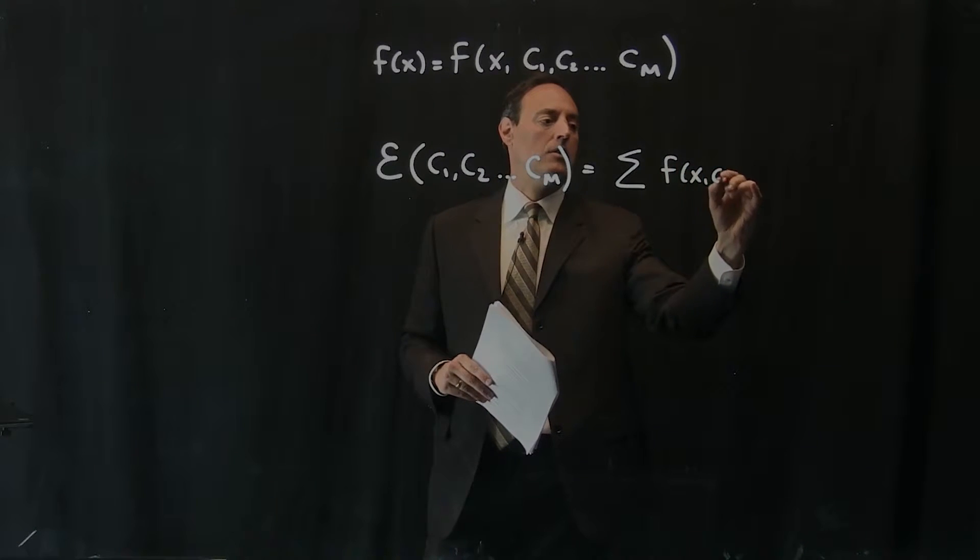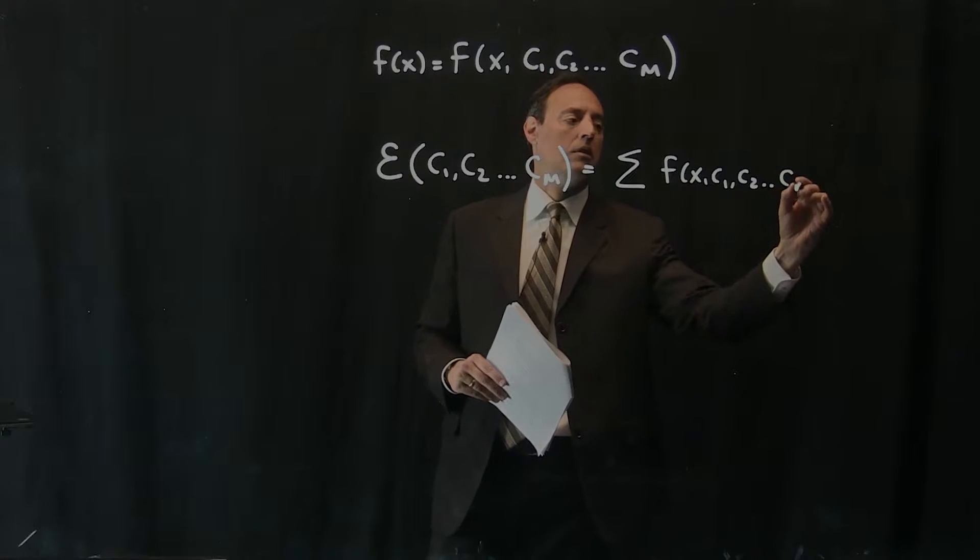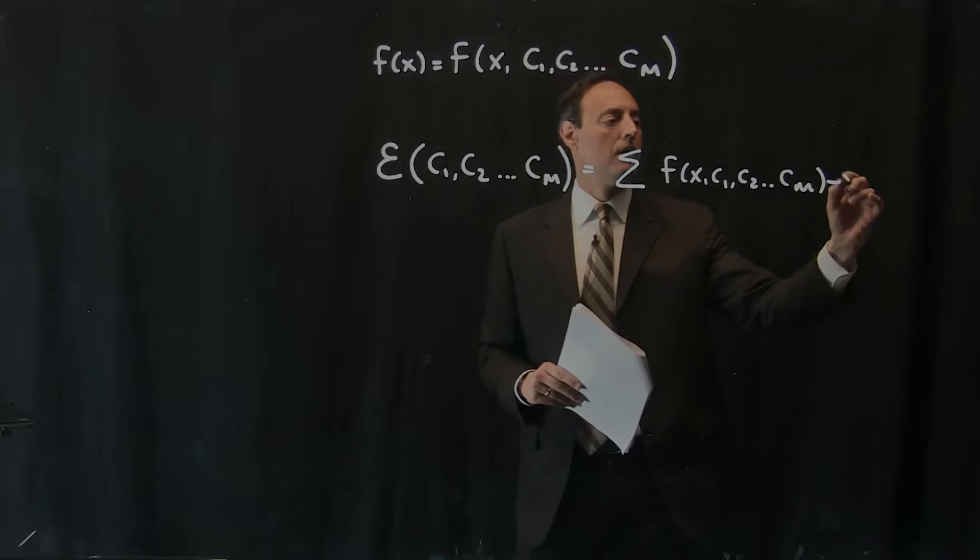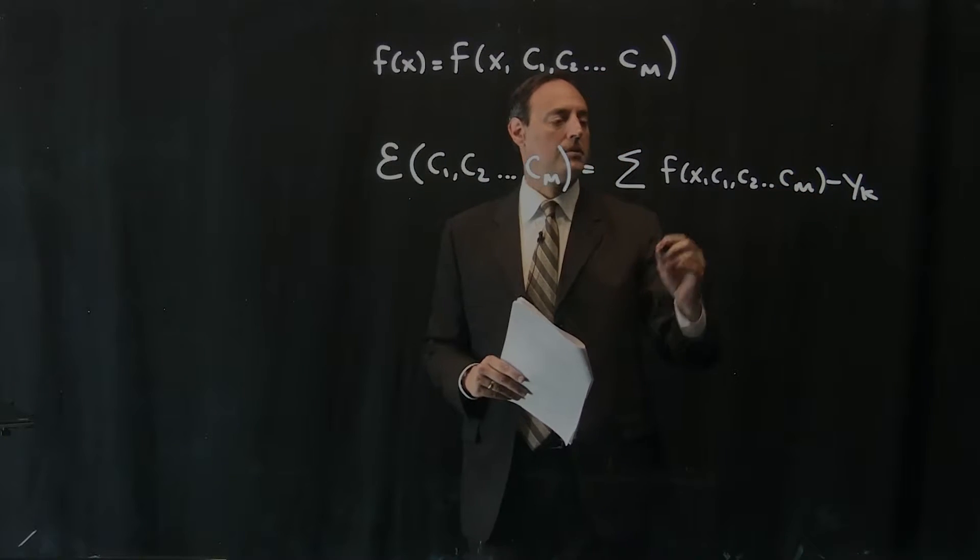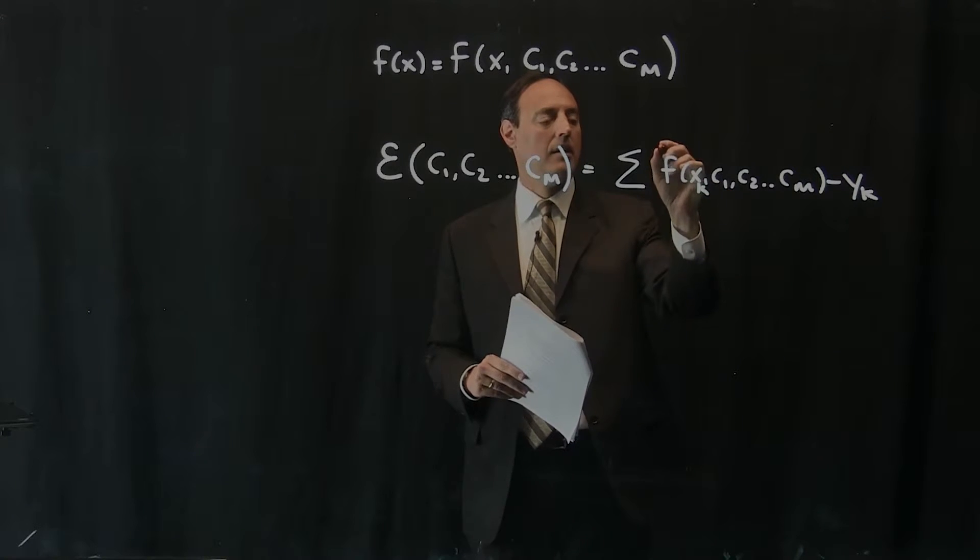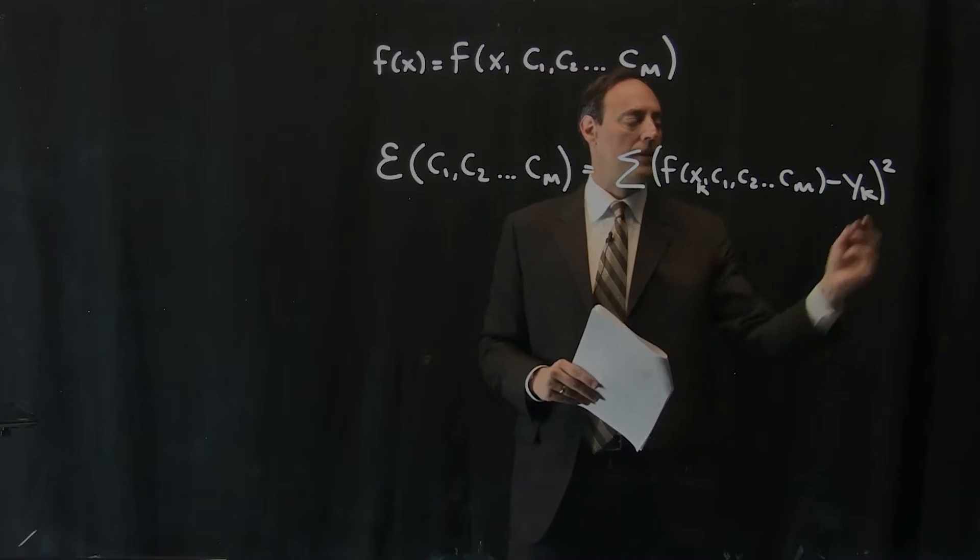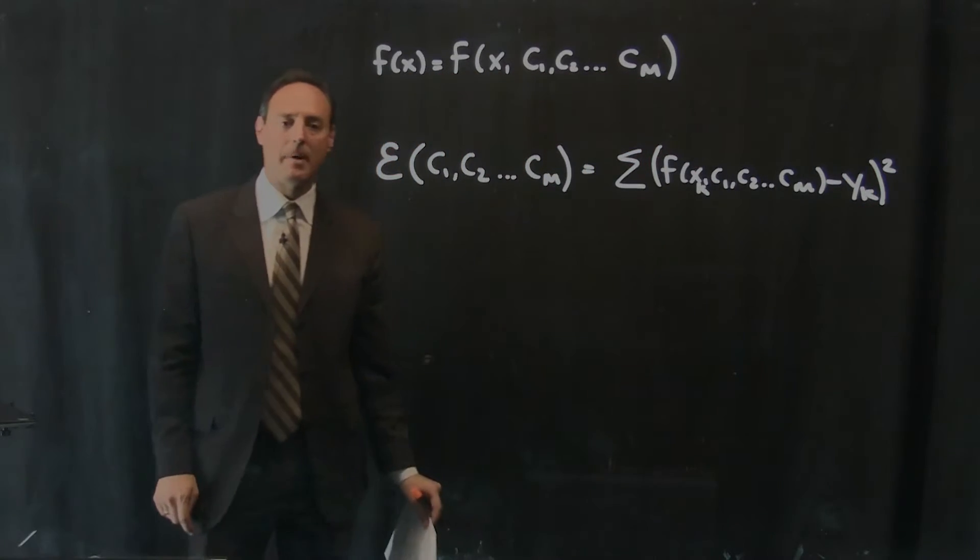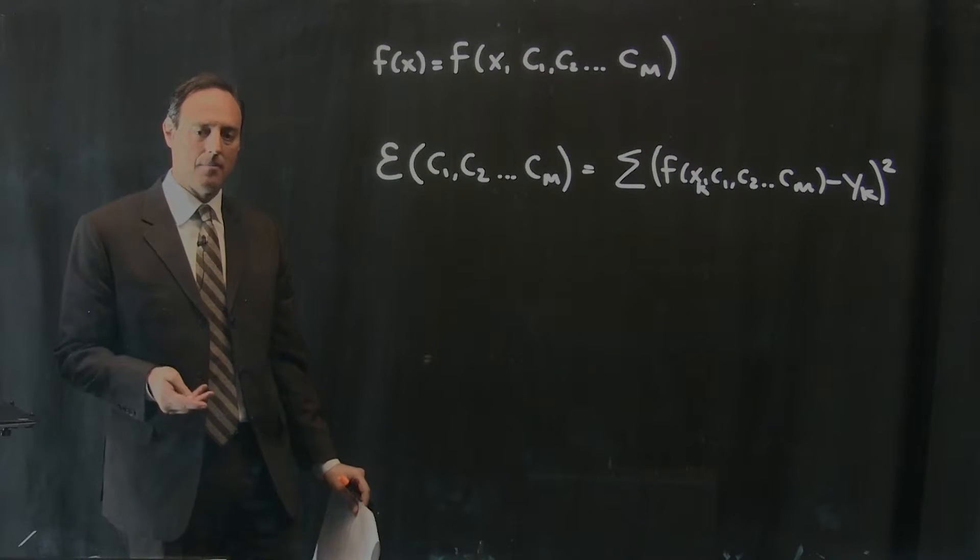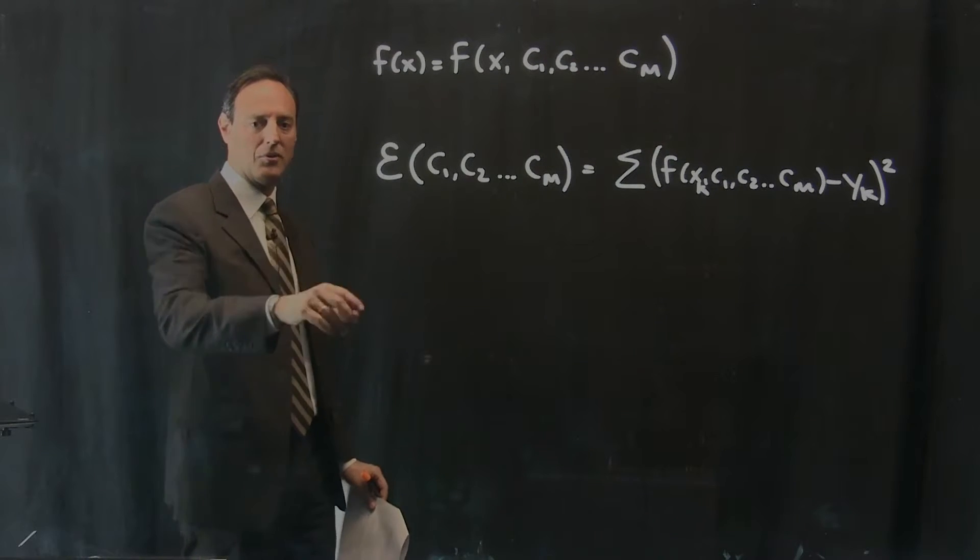This is at each x_k, and you're squaring that. What you'd like to do is minimize that sum. This is your error, and you want it to be as small as possible.